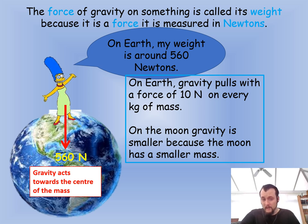So here is Marge. I don't know what happened to her eye. I am very sorry. So the force of gravity on something is called its weight. Because it is a force, it is measured in newtons. So very true. I agree. On Earth, my weight is around 560 newtons, Marge says. So on Earth, gravity pulls with a force of 10 newtons for every kilogram. So again, we've rounded up there just at this point. We will be using 9.8 when we're doing the exam questions, but I just want to make it easy to start with for you. So hopefully you can already tell me what her mass would be in kilograms.